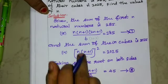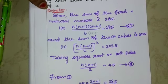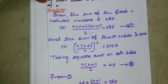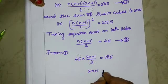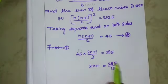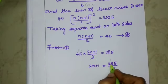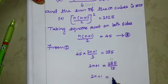Substituting n(n+1)/2 = 45 into equation 1: 45 × (2n+1)/3 = 285. Simplifying: 15 × (2n+1) = 285, so 2n+1 = 285/15 = 19.